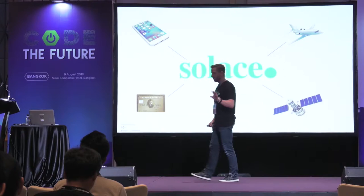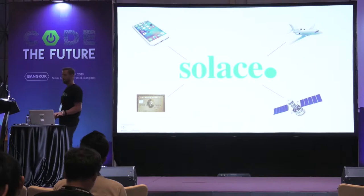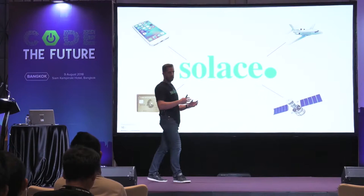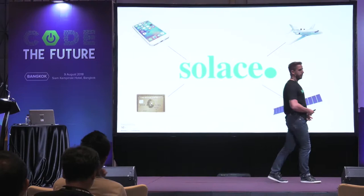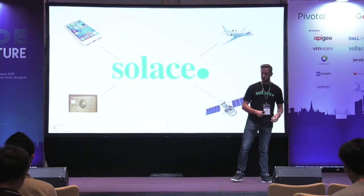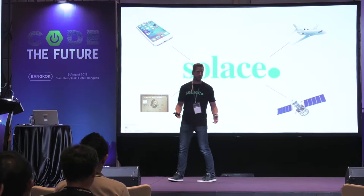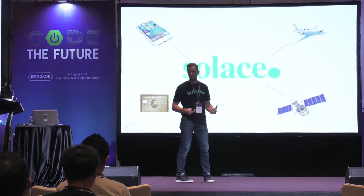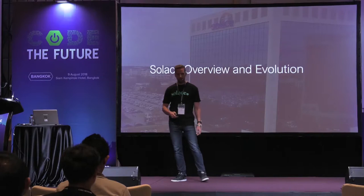A big American phone company uses Solace in their manufacturing plants in China to gather quality control data from assembly lines and send it to a data center in Hong Kong, then to California where it's analyzed in real time to provide detailed statistics on manufacturing processes. And we work with NASA — on their weather satellites, all that data is sent over a Solace messaging bus to provide real-time weather pattern analysis.